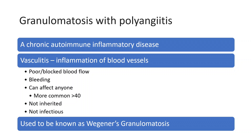GPA is a chronic autoimmune inflammatory disease. It is in a category of conditions which we call vasculitis. From the term, you can see that vasculitis means vascular — blood vessel — and any word that ends with 'itis' usually means inflammation. So vasculitis means inflammation of blood vessels. That inflammation leads to poor blood flow, or can be completely blocked blood flow, and can also result in bleeding.